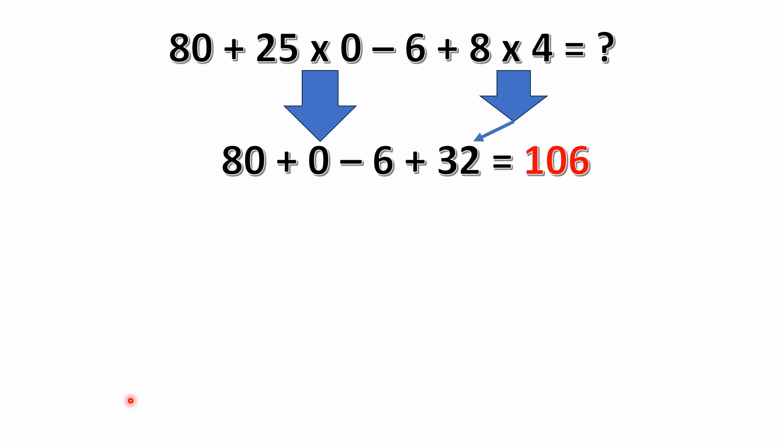8 times 4 is 32. So we're left with 80 plus 0 minus 6 plus 32 equals 106. So the answer to this problem is 106.